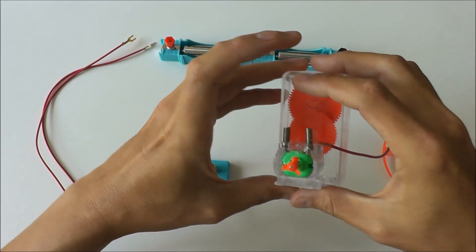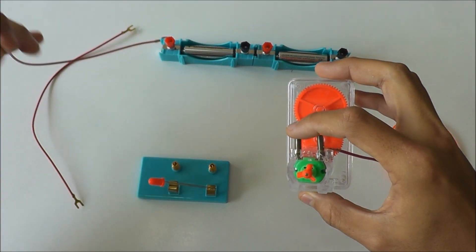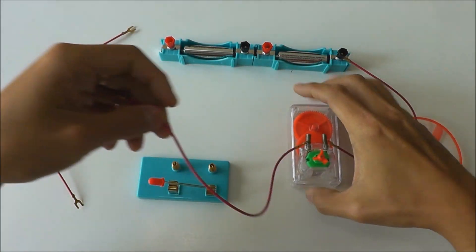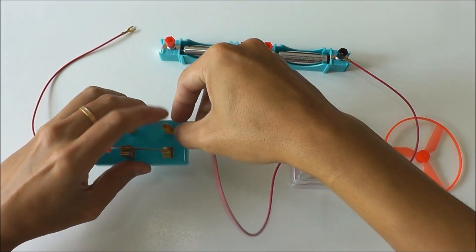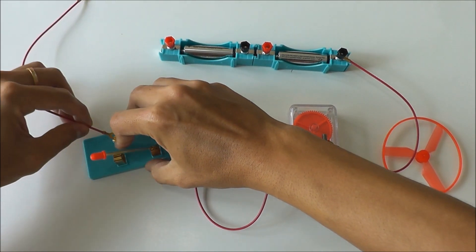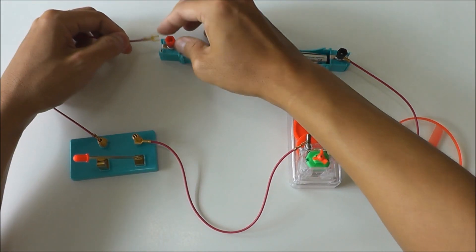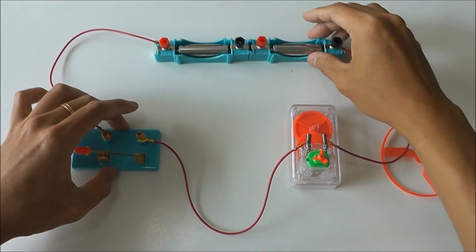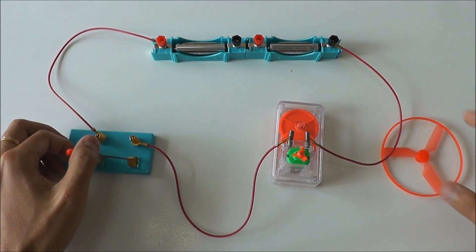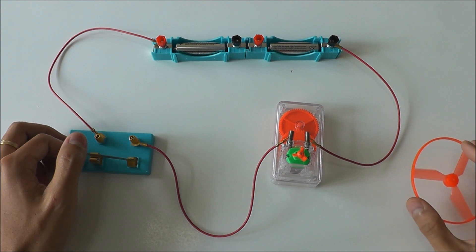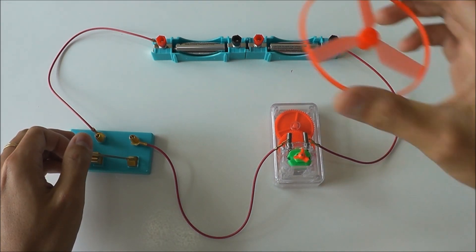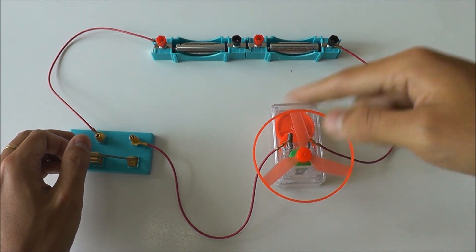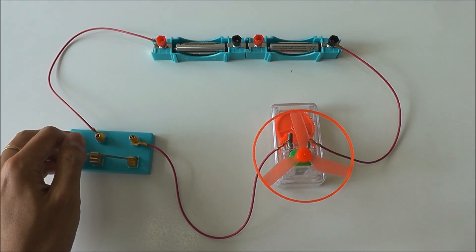We are ready to complete the entire series circuit. When I close the switch, the motor will spin, so we can put on the fan blade. The fan blade will turn like a chopper.